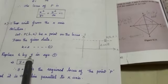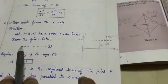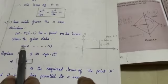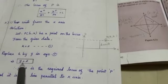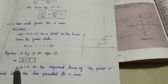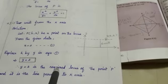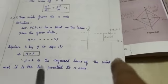Replace K by Y in equation number 1. That means H by X, K by Y. That's why we are replacing this K by Y. So Y equal to 2. Therefore Y equal to 2 is the required locus of the point P and it is the line parallel to x-axis.